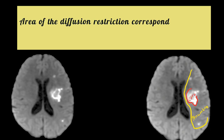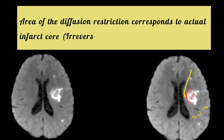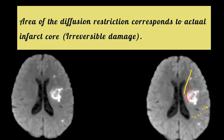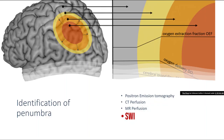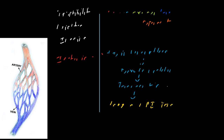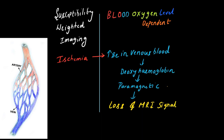The area of diffusion restriction corresponds to the actual infarct core — that is, the area of irreversible damage. However, diffusion images will not provide any information about the ischemic penumbra, the area which is salvageable with appropriate therapy. Imaging techniques to evaluate penumbra include PET-CT, CT/MR perfusion, and susceptibility weighted imaging.